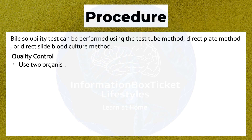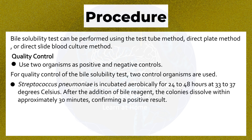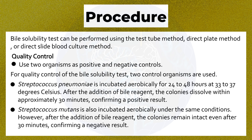Quality Control: Use two organisms as positive and negative controls. Streptococcus pneumoniae is incubated aerobically for 24–48 hours at 33–37 degrees Celsius; after addition of bile reagent, colonies dissolve within approximately 30 minutes, confirming a positive result. Streptococcus mutans is incubated under the same conditions; however, colonies remain intact after 30 minutes, confirming a negative result.